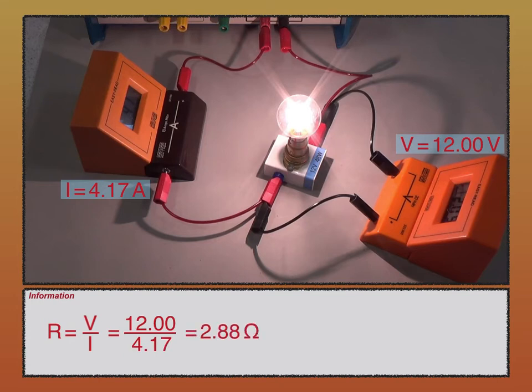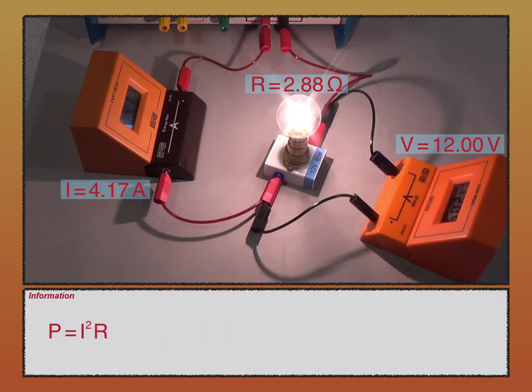Here's the third equation for electrical power: P is equal to I squared R. By now you'll know what quantities the letters signify. So the power of the lamp is equal to 4.17 squared multiplied by 2.88, which equals 58.1 watts to three significant figures. There's a slight difference from our previous answer due to rounding the value for resistance.